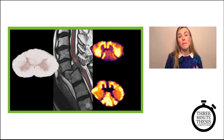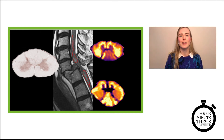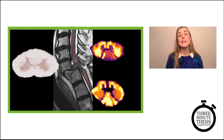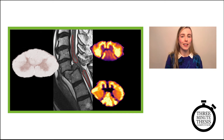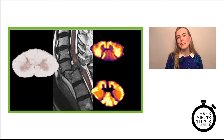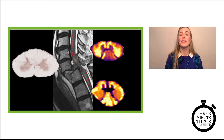Luckily, MRI is versatile, and we've developed advanced scans which can specifically measure myelin. In particular, I'm investigating a new technique with a long name called inhomogeneous magnetization transfer, or IHMT, which detects myelin in the brain and spinal cord using its distinctive magnetic properties.